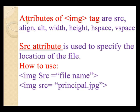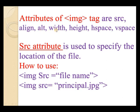The attributes of the img tag are: src, align, alt, width, height, hspace, and vspace. The src attribute specifies the file location, align sets the alignment, alt displays a message, width sets the image width, and height sets the image height.